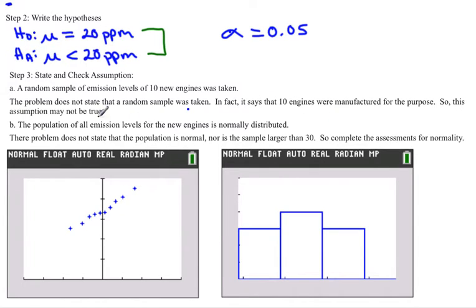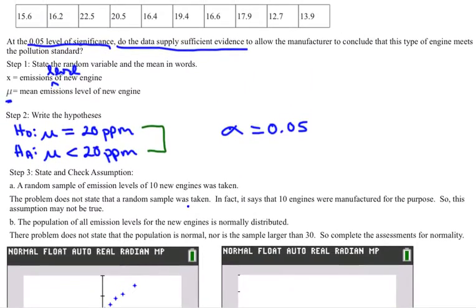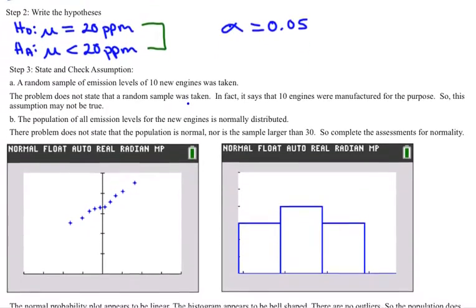The next assumption is that the population of all new emission levels for the new engines is normally distributed. Again you want to state that in terms of the problem. So the population is the emission levels and it's all of them for all the new engines. And we do want it to be normally distributed. The problem doesn't state whether or not it is. We also don't have a very large sample so we can't use it. It has to be greater than 30. So we have to actually do the assessments for normality.